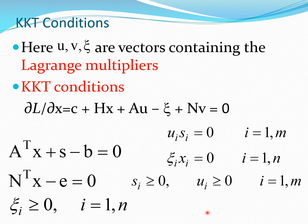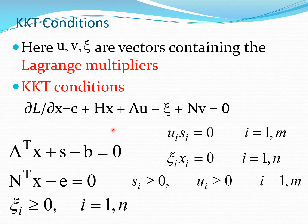U, V, and xi are vectors containing the Lagrange multipliers. To get the KKT conditions we differentiate the Lagrangian with respect to X, giving one equation in terms of C, H, A, and N. Differentiating with respect to U, V, and xi gives all the other equations, which throw back the constraints. You also have the switching conditions and the requirement that the slack variable and the Lagrange multiplier U are greater than or equal to zero.